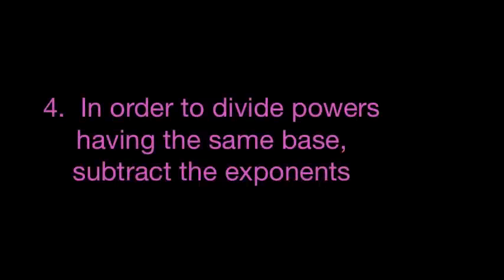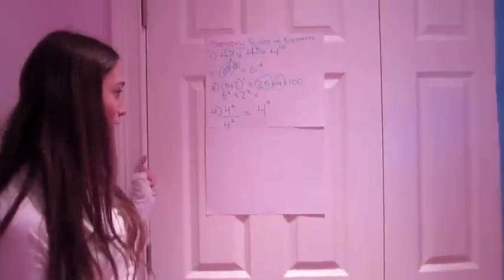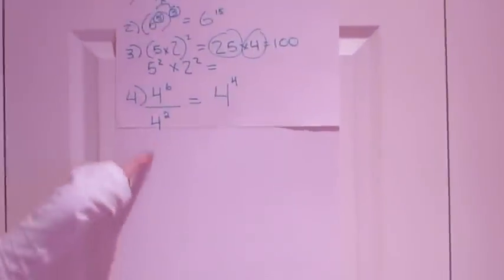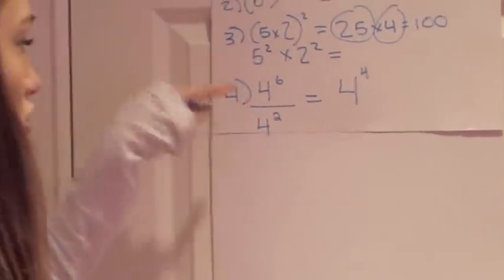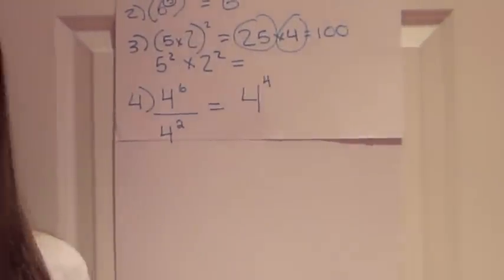The fourth rule is that in order to find powers having the same base, subtract the exponents. For example, when dividing 4 to the sixth power by 4 to the second power, you keep the base the same, which is 4, and you subtract 2 from 6, so the answer would be 4 to the fourth power.